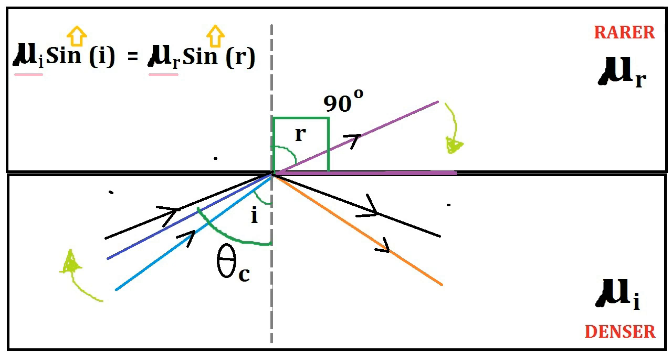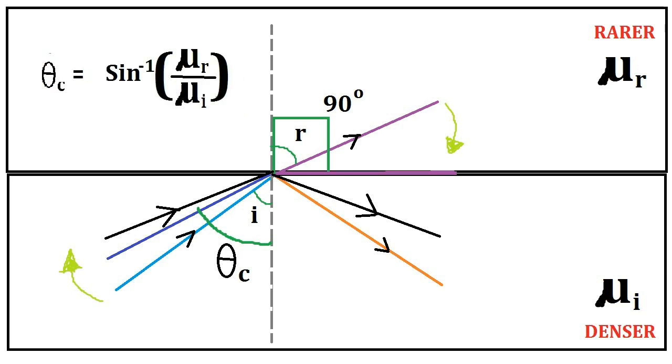If we want to calculate the value of the critical angle, we can substitute the value of r equals 90 degrees and solve the equation. We can then calculate the value of θ_c.